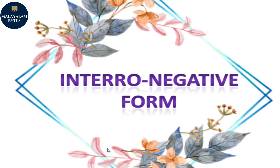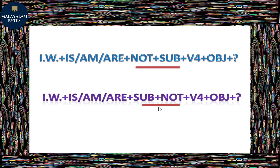Now let's look at the interrogative-negative form. The question form combined with negative. The helping verb comes first, then 'not'. The rule is: interrogative word plus is/am/are plus not plus subject plus fourth form of the verb plus object plus question mark. Alternatively: interrogative word plus is/am/are plus subject plus not plus fourth form of the verb plus object plus question mark. Both placements of 'not' - before or after the subject - are accepted.